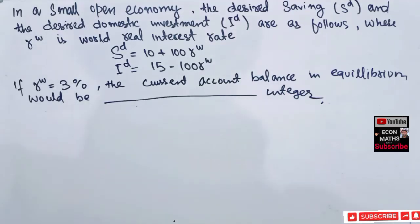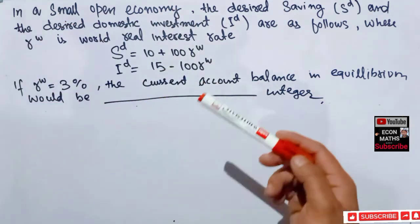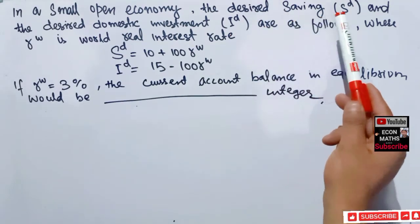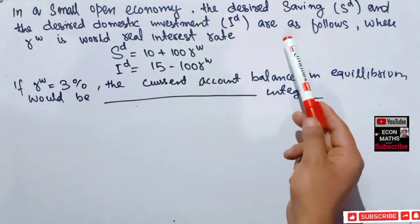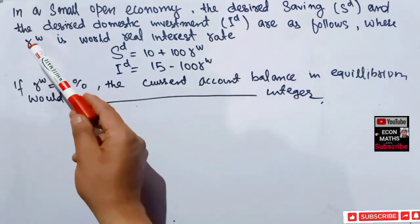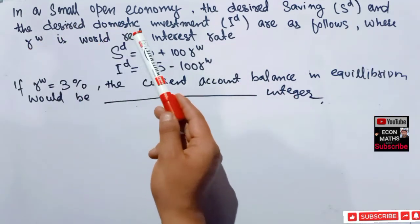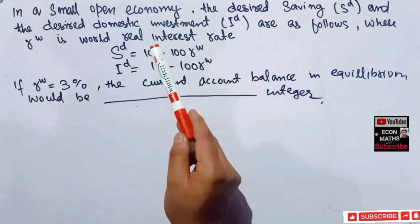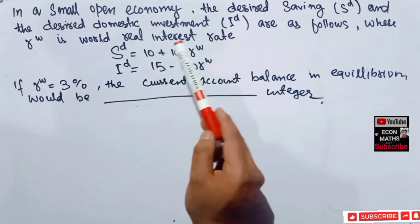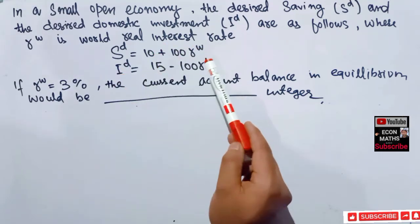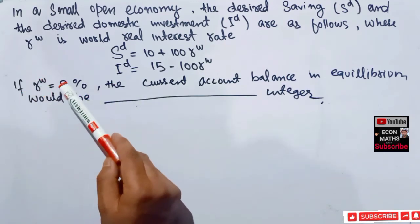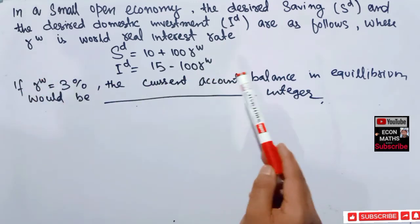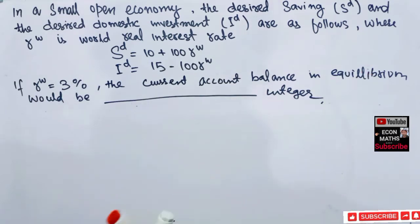In this video we will try to solve another numerical that was asked in the JAM Economics paper of 2021. The question is: in a small open economy, the desired savings and desired domestic investment are as follows, where r superscript w is the world real interest rate. Savings equals 10 plus 100 times r, and investment equals 15 minus 100 times r. If the world interest rate is 3%, we need to find the current account balance in equilibrium.